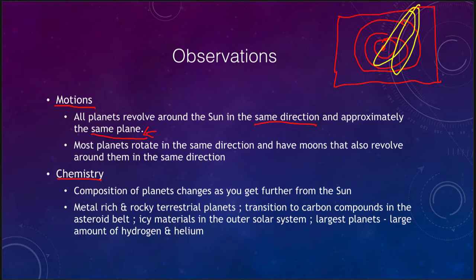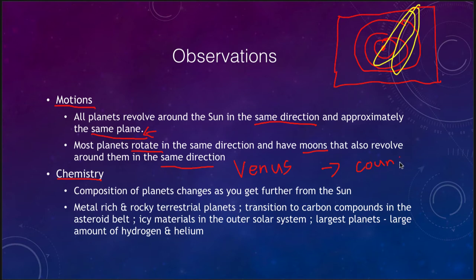Everything is essentially in the same plane. We also find that planets rotate in the same direction for the most part, with the big exception being Venus, which rotates in the opposite direction. The major moons of the planets also revolve around their planets in the same direction. So essentially everything in the solar system is moving counterclockwise when viewed from above the Earth's north pole.